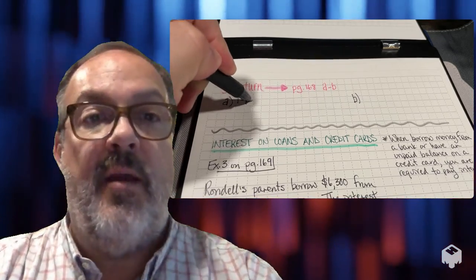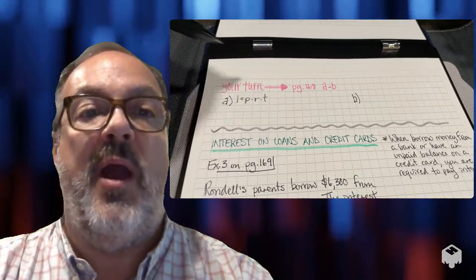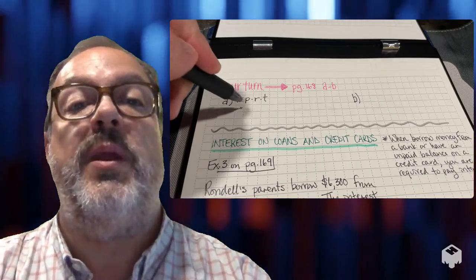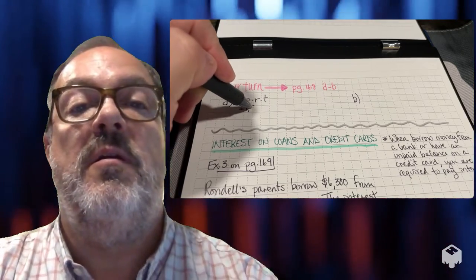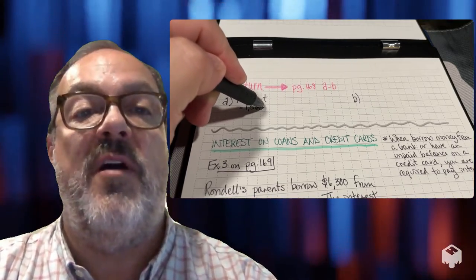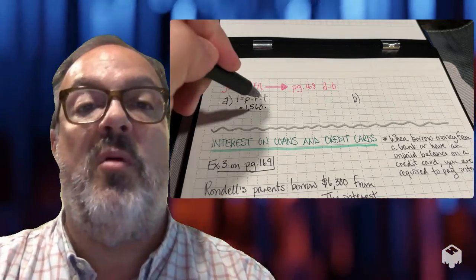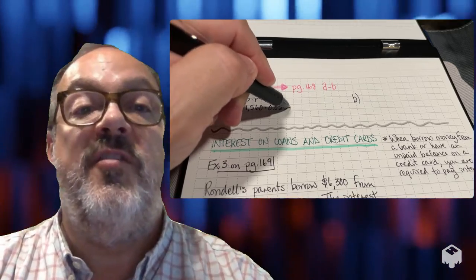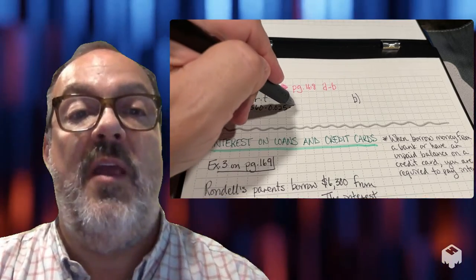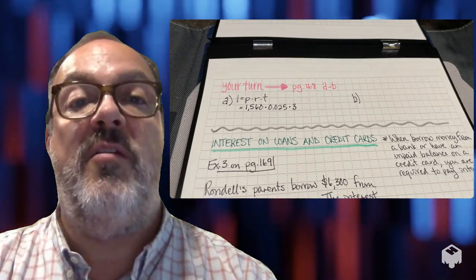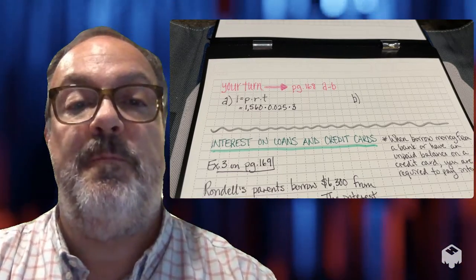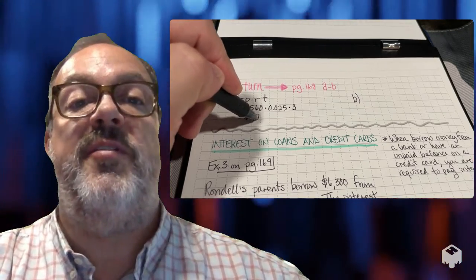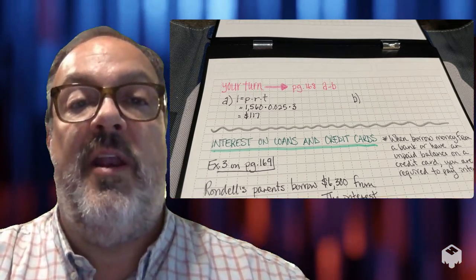In problem A, I'm always going to start out with I equals PRT. My principal in this case is $1,560, and I'm going to multiply that by my rate, which is 0.025, and then multiply by the years, which is 3. So I get a simple interest of $117.